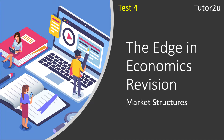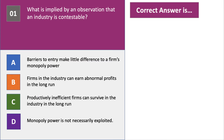Welcome to test four in our 2019 series on the edge and economics provision. This is a five-question short video on market structures. Question one is: what is implied by an observation that an industry is contestable? Press the pause button, have a go at the question, and then come back when you want to go through it.